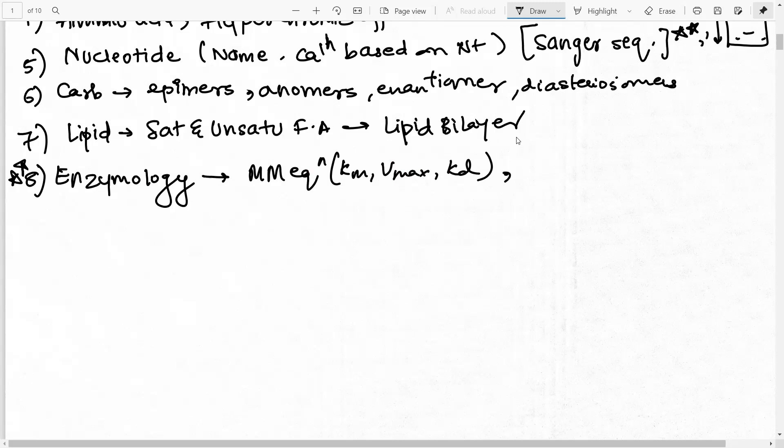Then the other type of question that they ask you is on the types of inhibition - types of inhibition: competitive, non-competitive, uncompetitive, what happens to the KM, what happens to the Vmax.